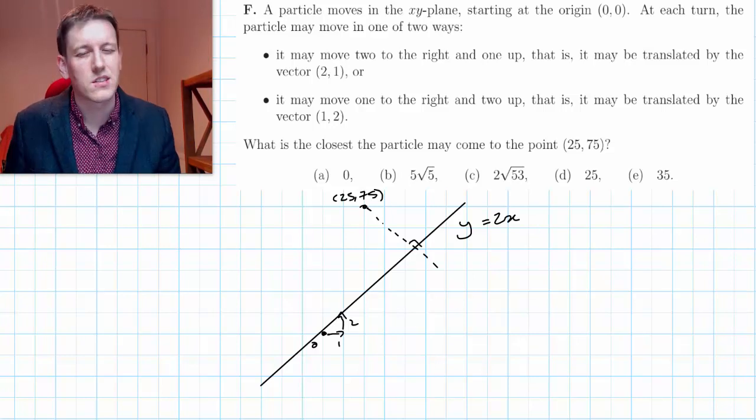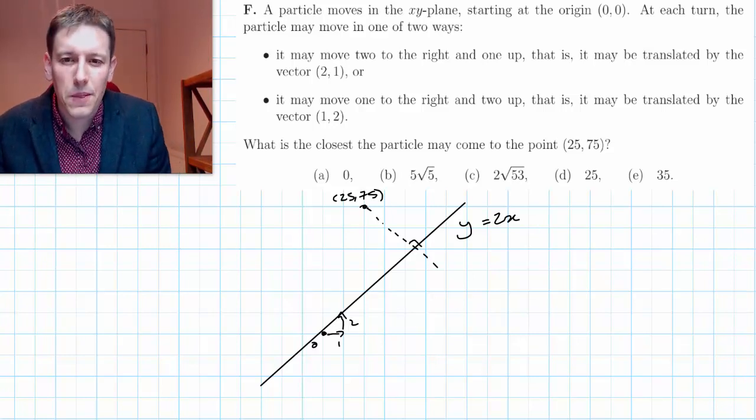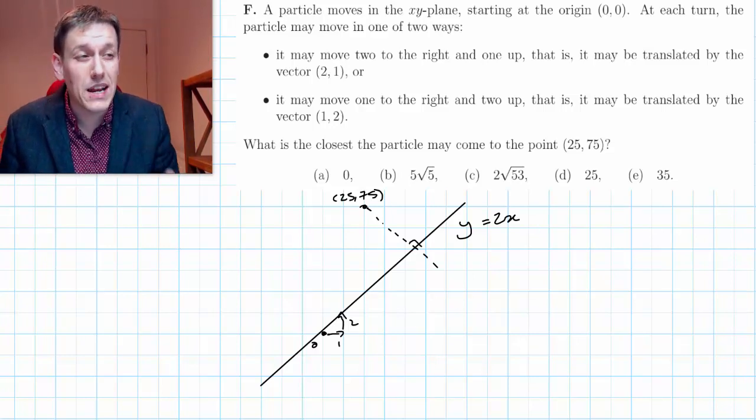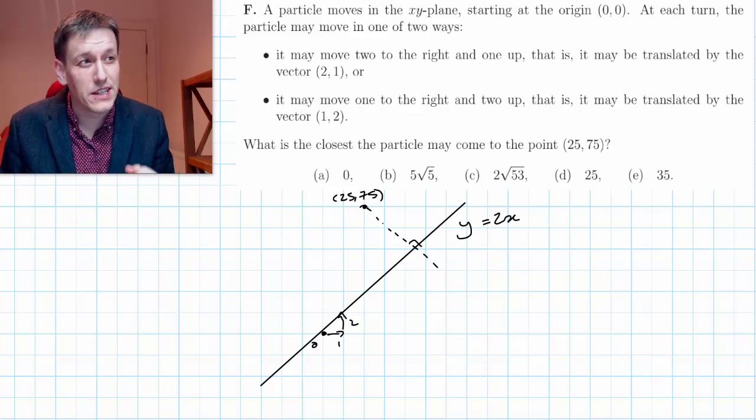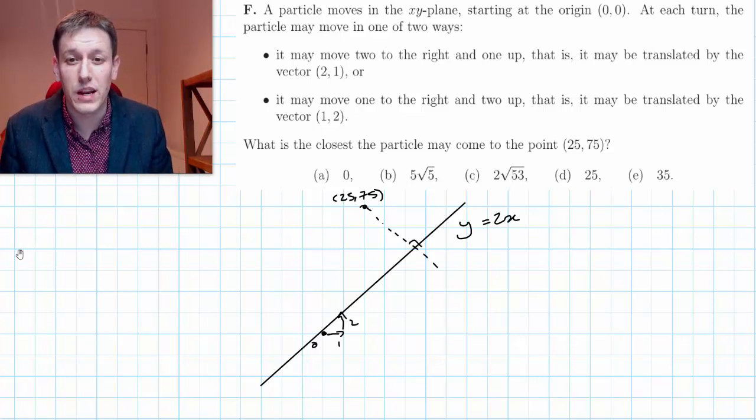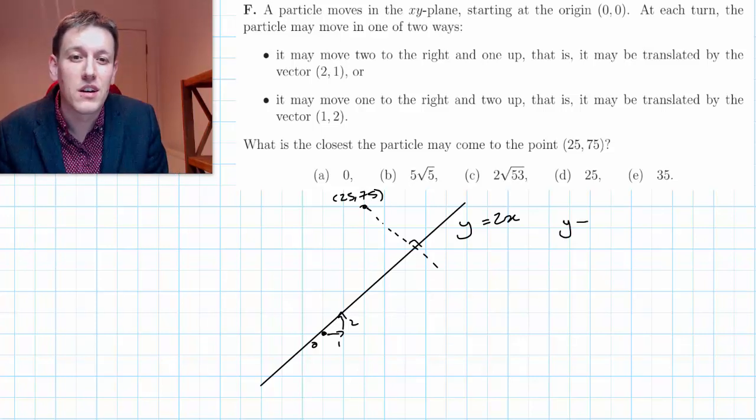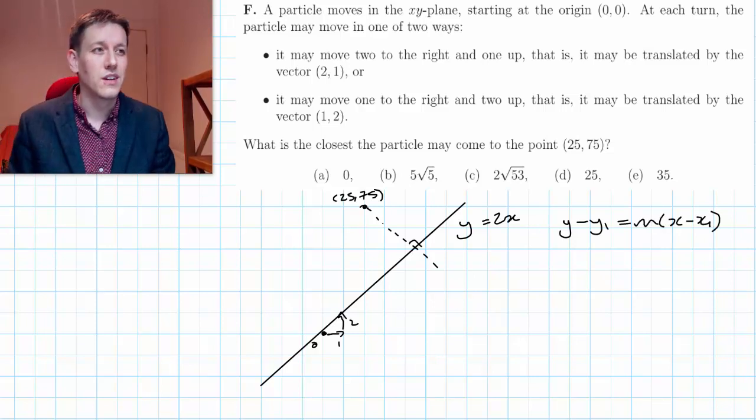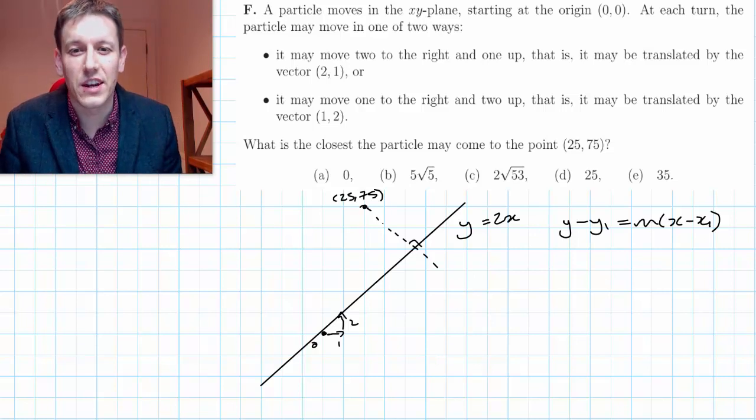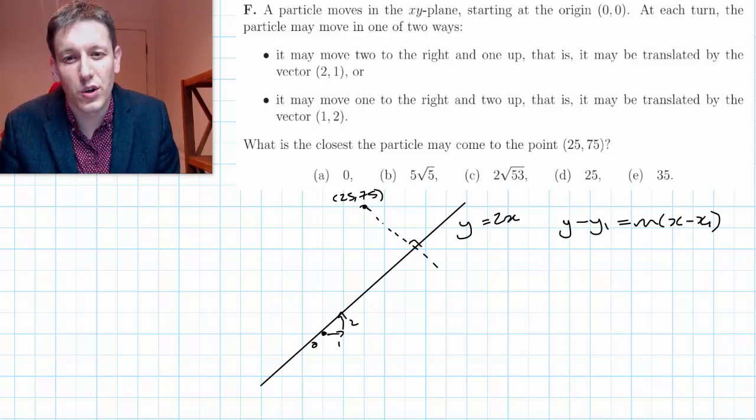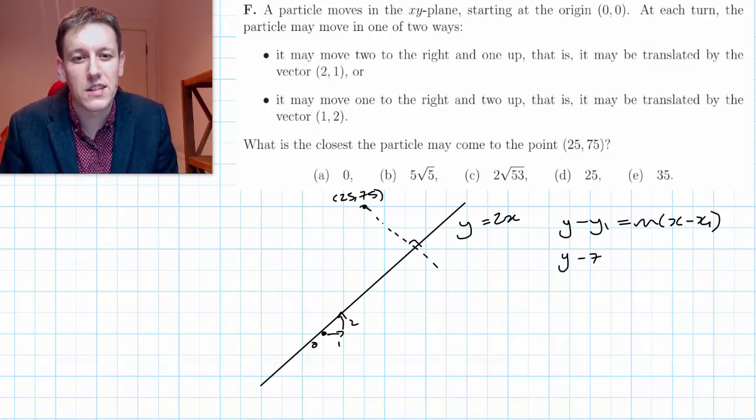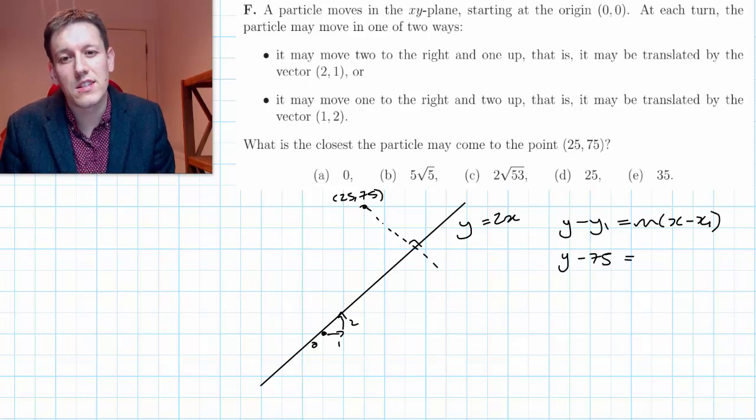If it's not we may just tweak the answers slightly at the end. Now from A level maths you need to be able to write down equations of lines very quickly. I really recommend the form y minus y1 is m times x minus x1.